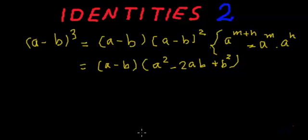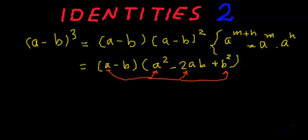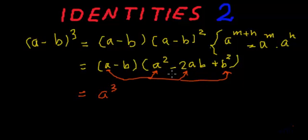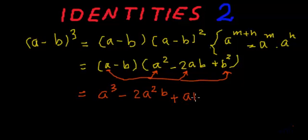Now we will do simple multiplication. We will take the first term of the first expression and multiply it to all the terms of the second expression. When we multiply the first term 'a' of the first expression to all the terms of the second expression, we get a multiplied by a squared, that is a cubed, then a multiplied by minus 2ab gives minus 2a squared b, and then a multiplied by b squared gives plus ab squared.